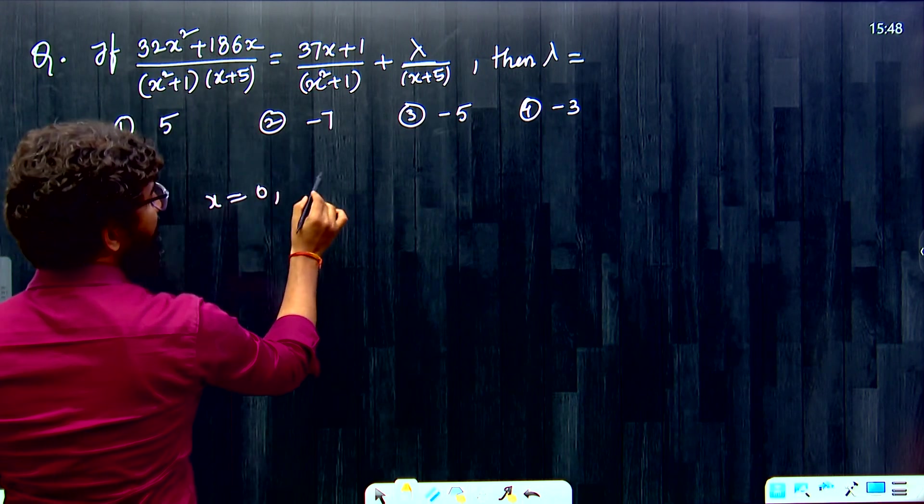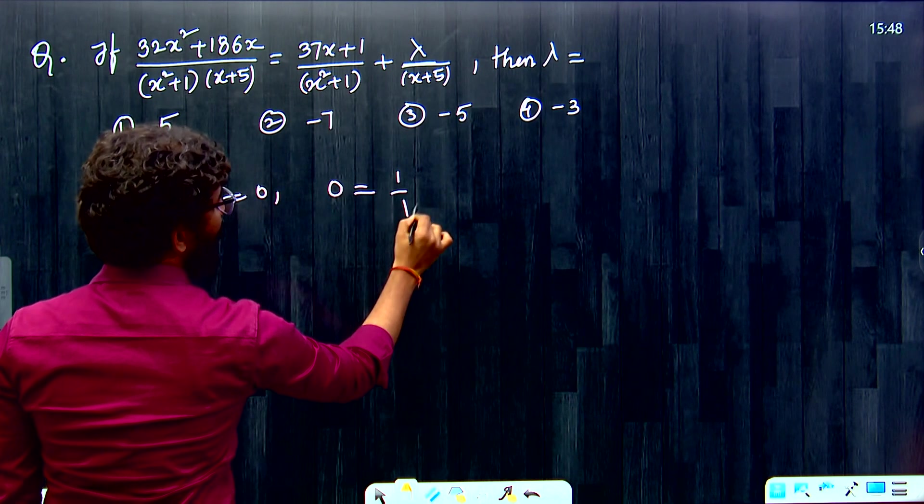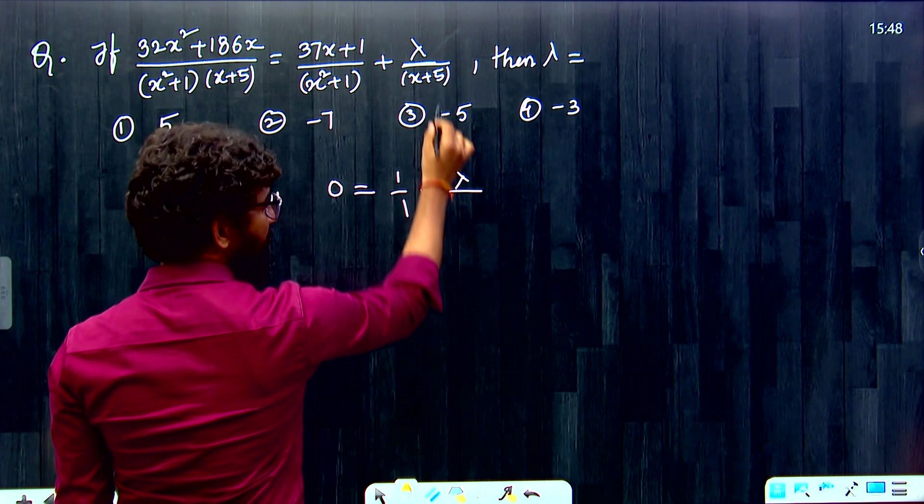Then see. 0 plus 0, 0 by something. 0 left hand side. Right hand side, 0 plus 1 is 1. 1 by 1 plus lambda by 0 plus 5 is 5.